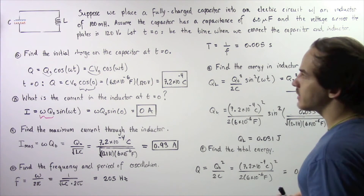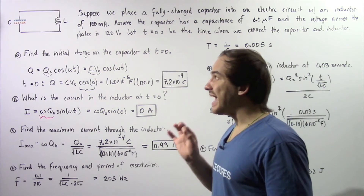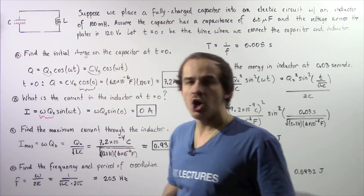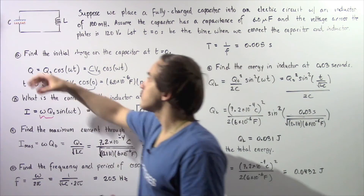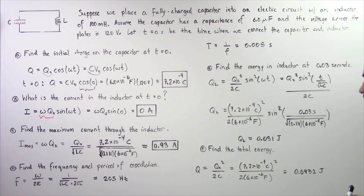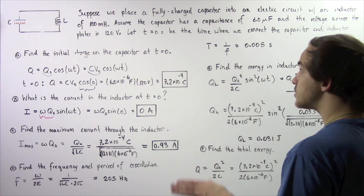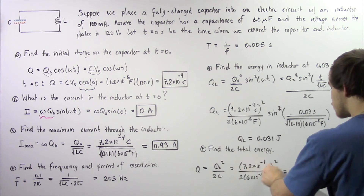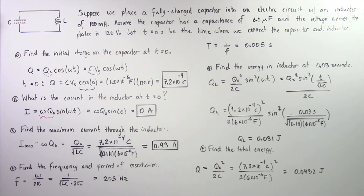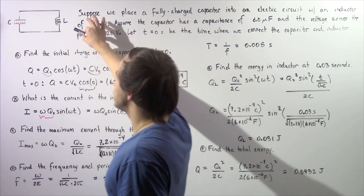Finally, part F asks for the total quantity of energy inside the LC electric circuit. Because energy is conserved, the total energy inside the LC circuit remains constant — it oscillates back and forth between the capacitor and the inductor, but the total always remains constant. Using the equation derived for energy storage in LC circuits, total energy equals Q0 squared divided by 2C. Plugging in Q0 squared divided by 2 times the capacitance gives us 0.0432 joules as the total energy stored inside the LC circuit containing an inductor and a capacitor.